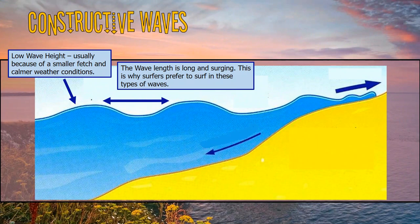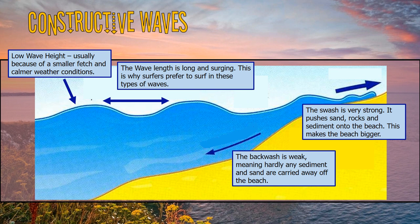The other type of wave is the constructive wave — pretty much the opposite in every possible way. They have a low wave height, so they look quite calm, as the wind and fetch aren't as large. The wavelength is long, so the time between waves is much longer — they're less quick and less strong. What these have is a strong swash, so they push sand, rocks, and sediment up the beach, but they have a weak backwash. Material is forced up the beach, the energy is lost, and it can't be pulled back into the sea — so we gain material on the beach. Hence why it's called a constructive wave.